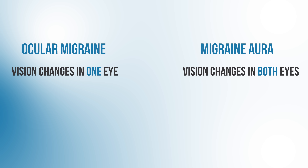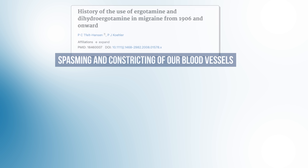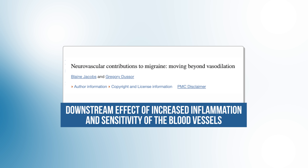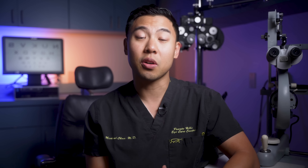The reason for this difference comes from the underlying pathophysiology. The exact mechanism of both ocular migraines and migraine auras is not totally understood. Some studies suggest they may be caused by spasming and constricting of blood vessels, but others suggest it might actually be dilation or widening of these blood vessels. Other studies suggest that spasming may not be the cause but rather a downstream effect of increased inflammation and sensitivity of the blood vessels in our eyes and brain during an ocular migraine or migraine aura.